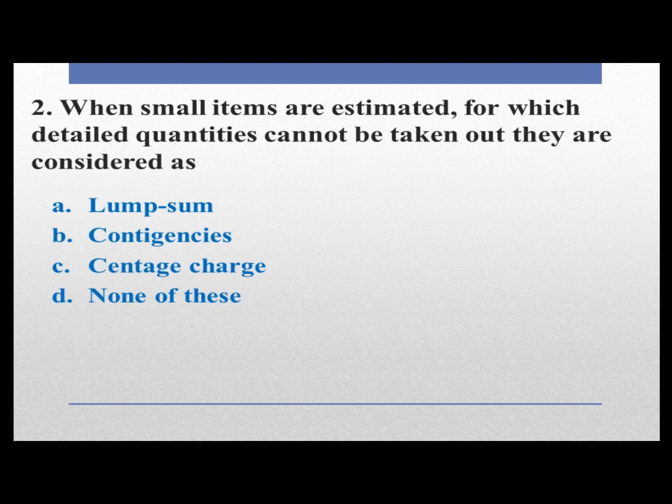When small items are estimated for which detailed quantities cannot be taken out, they are considered as: option A lump sum, option B contingencies, option C sundry charges, option D none of these. They are considered as lump sum. Option A is correct.